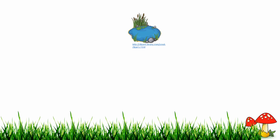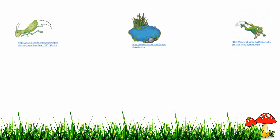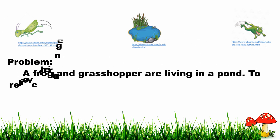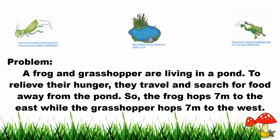I have here a pond, a grasshopper, and a frog. Here is the problem: a frog and grasshopper are living in a pond. To relieve their hunger, they travel and search for food away from the pond. The frog hops seven meters to the east while the grasshopper hops seven meters to the west.